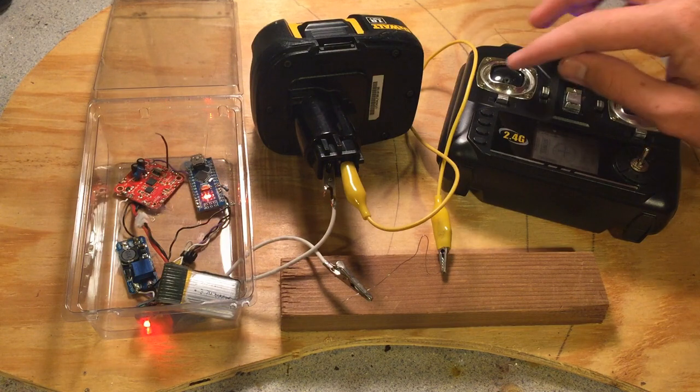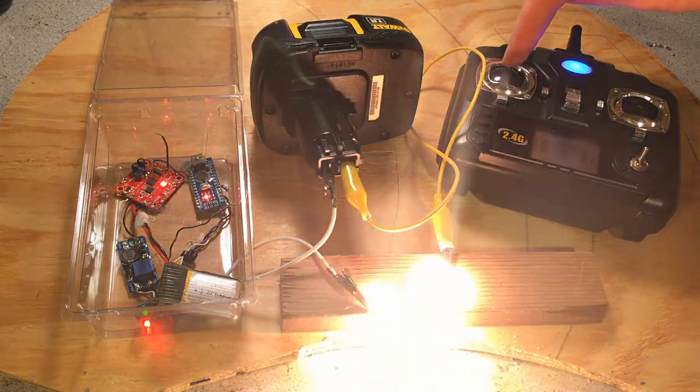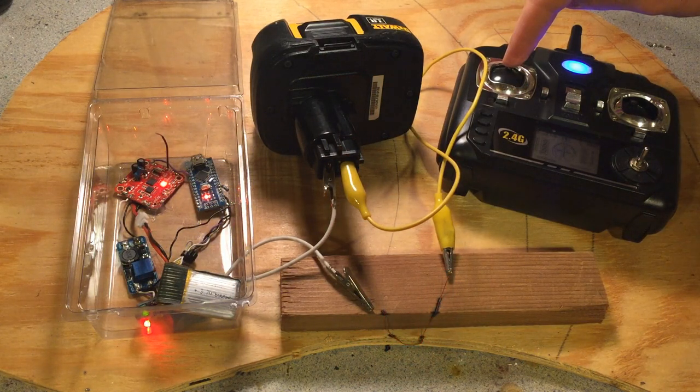This nichrome does need a good amount of current to flow through it before it gets red hot, so my 18 volt drill battery will do the job quite well.